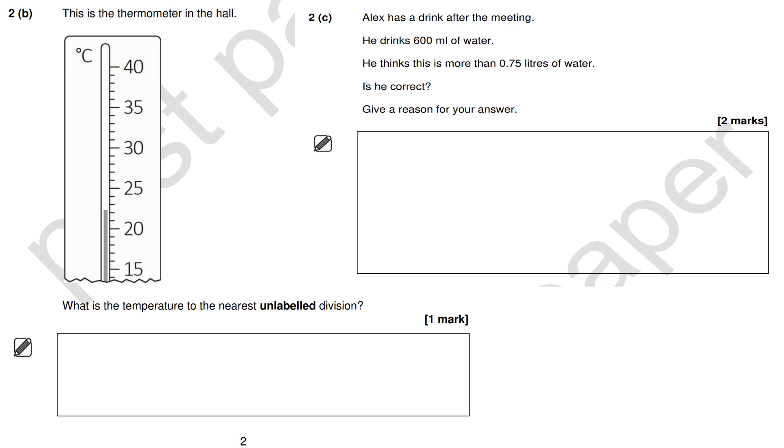This is question 2b and 2c from the NCFE Entry 3 Functional Skills Math Section B, Paper 10. It's a calculator paper. Question number 2: This is the thermometer in the hall.